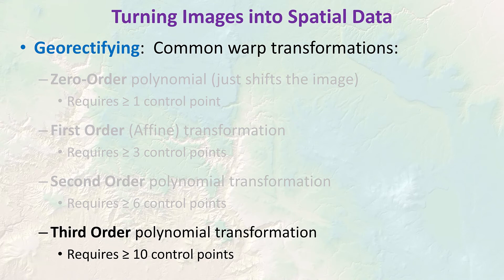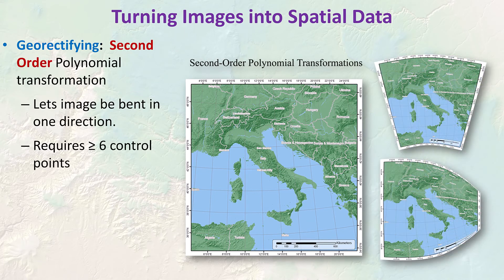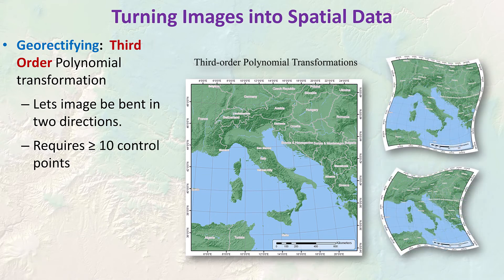What do these first, second, and third order transformations look like? The first-order affine transformation needs three or more control points and is notable in that any straight line in the original image will still be straight in the transformed image — it's similar to stretching, resizing, or skewing, with no bending. The second order allows a bend in one direction, meaning a straight line in the original will probably be curved in the new image — it needs six or more control points. A third order lets you bend in two different directions and takes ten or more points.